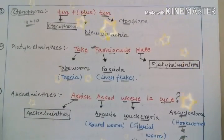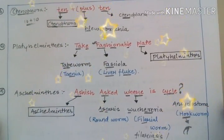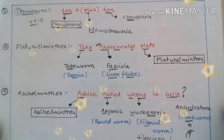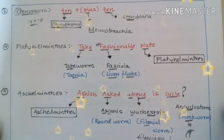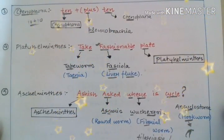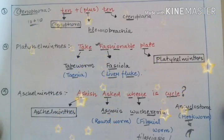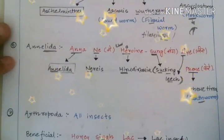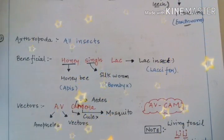Hello guys and welcome back to another video from Vipin Sharma Biology Tutorials. In the last lecture we were learning the examples of different phylums of Kingdom Animalia and we learned about Annelida. So now the next phylum is Arthropoda.